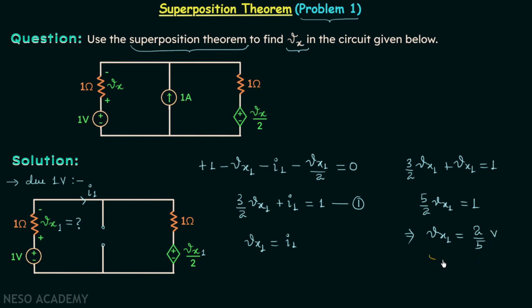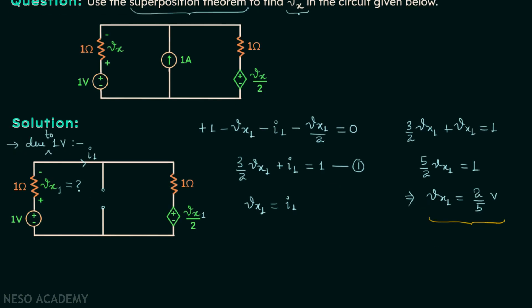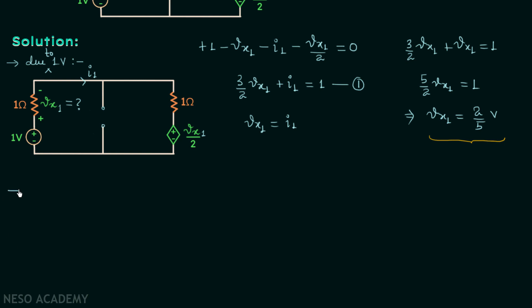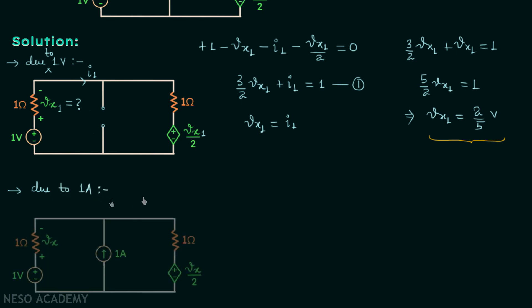We have obtained the voltage across the resistor due to the 1 volt source, completing case number 1. Moving to case number 2, we find the voltage across this resistor due to the 1 ampere source. For this we short-circuit the independent voltage source. That is the first modification, and the second modification is renaming this voltage as Vx2.